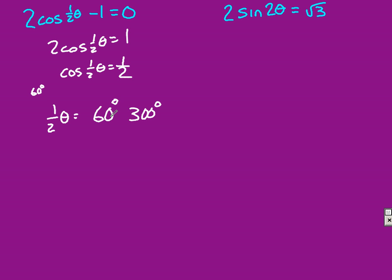So our answer in the end should be, well, I need to divide by 1 half. That's the same as multiplying by 2. So theta here equals 120 and 600. And yes, you could possibly get answers that are outside of your 0 to 360 range like we've done before.